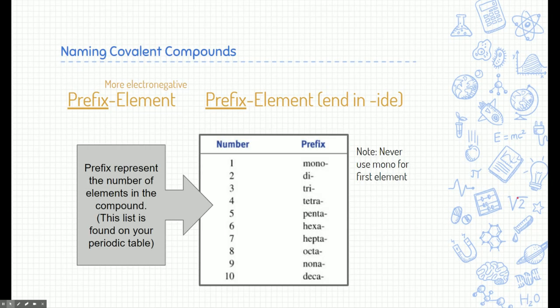All right, so how do we name covalent compounds? It's a little bit different. There's some similarities between ionic, but there's also some differences. In order to name covalent compounds, we need to include a prefix before each element to represent the number of elements in that compound. Now, this prefix right here, number one means mono. Think like a monocle or a single glass. Two means di, like to divide something in two. You're probably familiar with tri, tetra, penta. A lot of these we use in math, like or tricycle for three, tetra for four, penta for five, hexa six, hepta seven, octa eight, nona nine, and deca, like decade is 10. Like these are on the back of your periodic table. You don't have to memorize them, but know that they're there.